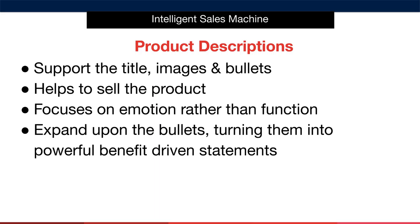A great product description supports your title, images, and bullet points. I recommend using your bullet points as sections within your description, using each paragraph to flesh out the benefits of each bullet point and tell people how your product will make their life easier or more organized. A simple framework to remember is this: features or bullets tell, benefits or descriptions sell. We focus on emotion, which means selling the benefits of what you're selling rather than just talking about the dry features of the product.